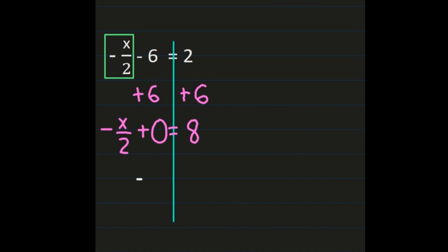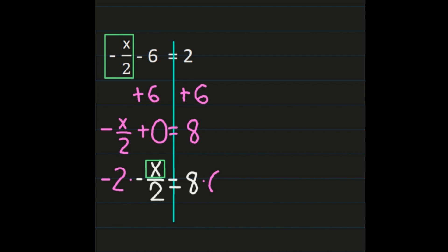Simplifying: negative x over 2 plus 0 equals negative x over 2, and the 8 stays on the right. Now I have the one-step equation negative x divided by 2 equals 8, and I want to isolate x. I have x divided by 2, so I need to multiply. I'll think of the negative sign as being with the 2 and multiply by negative 2 on both sides. On the left, the 2s simplify out and a negative times a negative gives a positive x. On the right, 8 times negative 2 — a positive times a negative is a negative — and 8 times 2 is 16, so x equals negative 16.